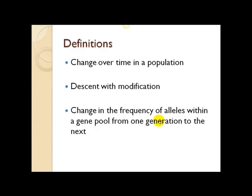A more specific scientific definition is a change in the frequency of alleles — variants of genes within a gene pool — from one generation to the next. It's a very specific definition.